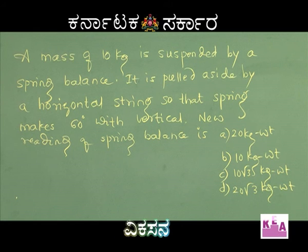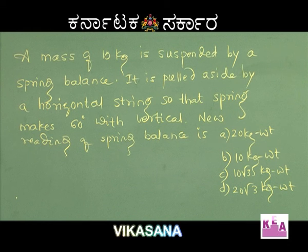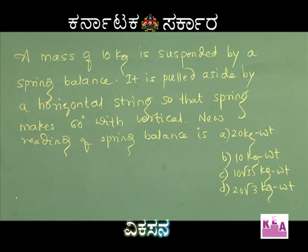A mass of 10 kg is suspended by a spring balance. It is pulled aside by a horizontal string so that the spring makes an angle of 60 degrees with the vertical. The new reading of the spring balance is to be found.